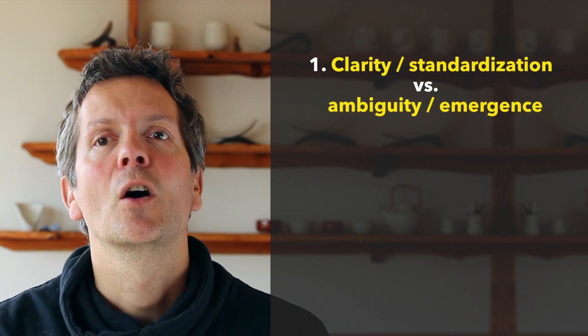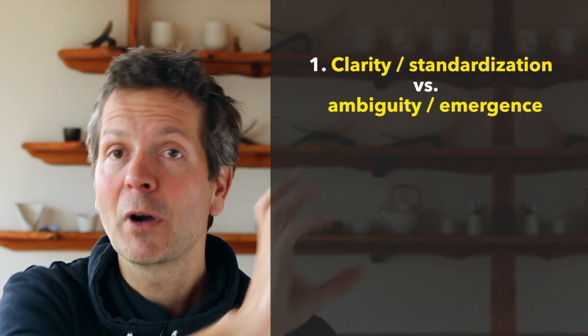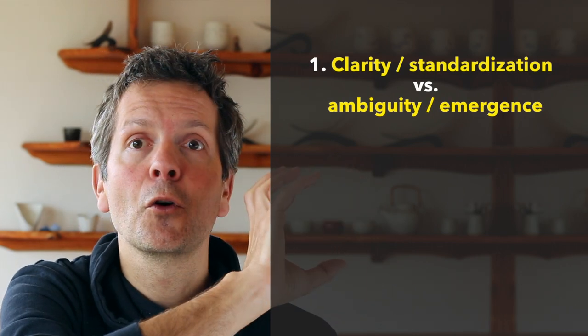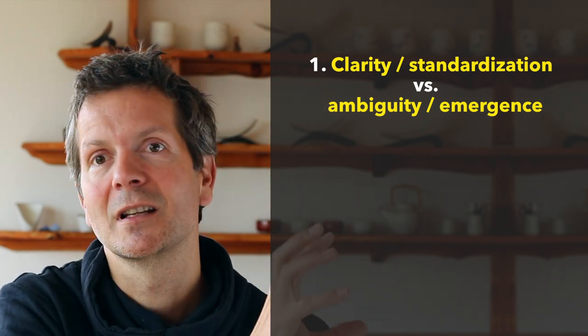And the way I started to think about it is in terms of polarities. So the first one that comes to mind is this very important polarity between a preference that some of us have for clarity and standardization, or a preference that some of us have for ambiguity and emergence and chaos.